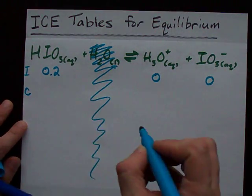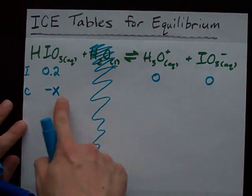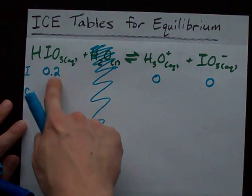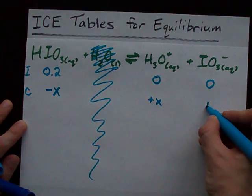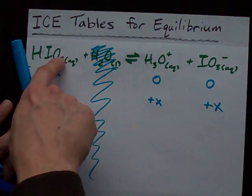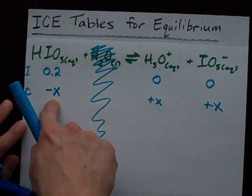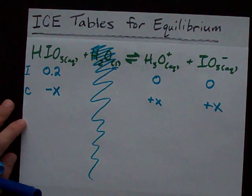What's our change? Well, you start with some of this and you're going to lose some amount. We'll call it X. If we lose X of these, we're going to gain X of these. See how if we get rid of some of this, we have to gain some of this. You are losing iodic acid and gaining iodate and the associated hydronium ion.